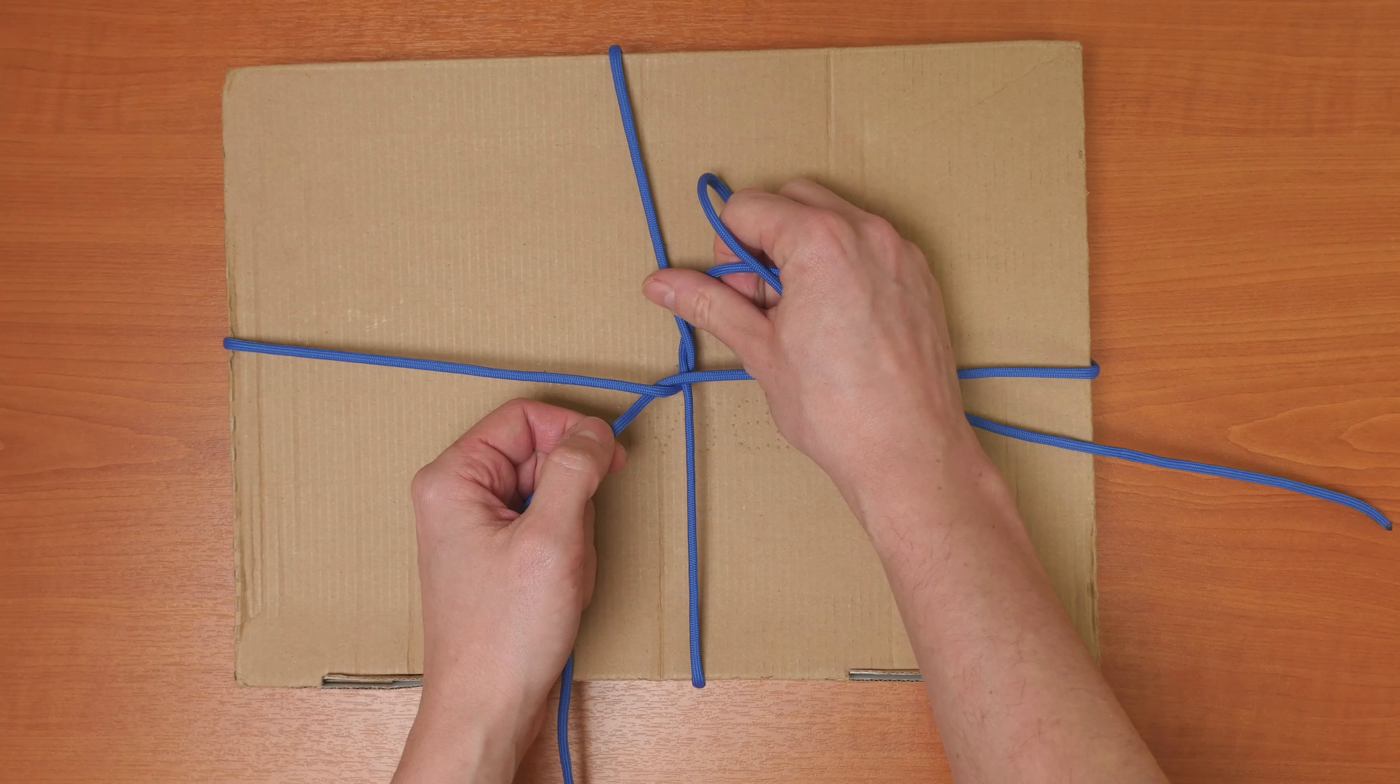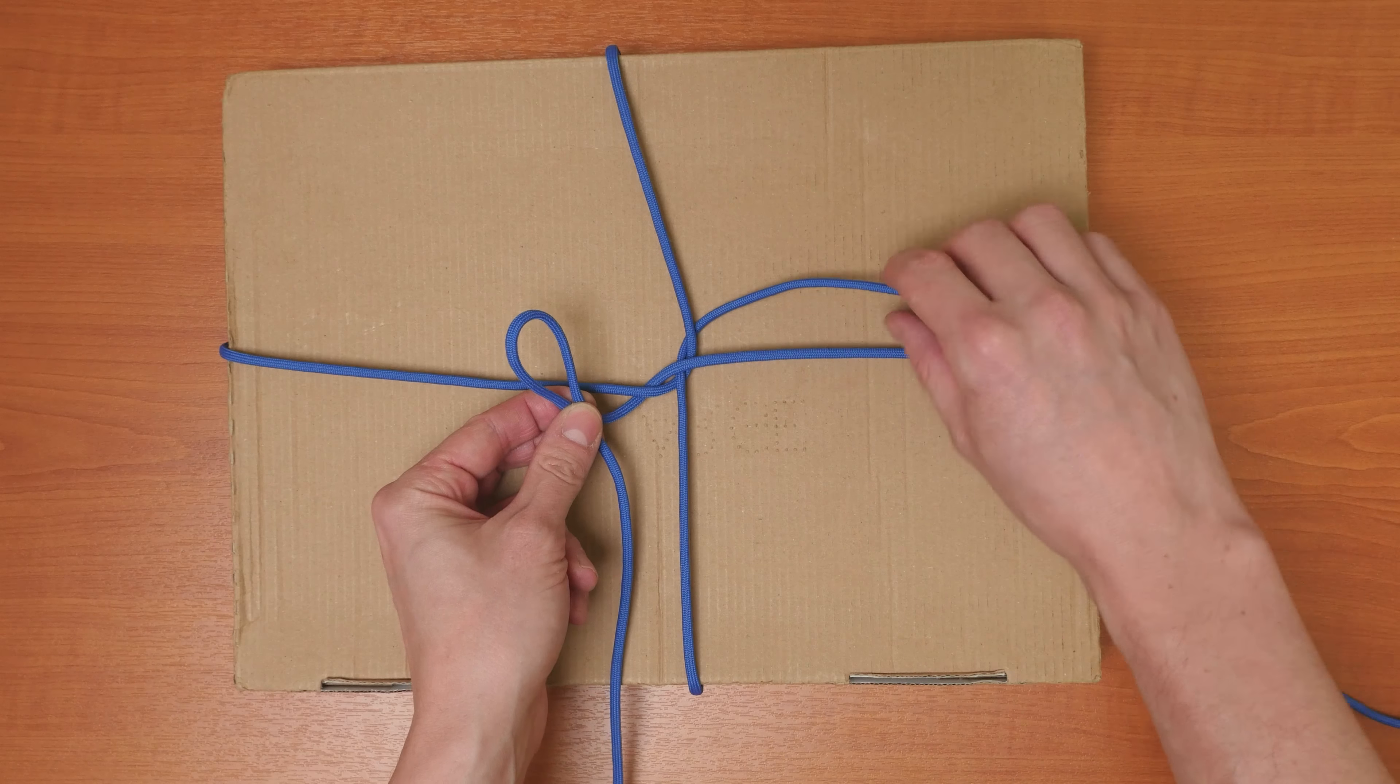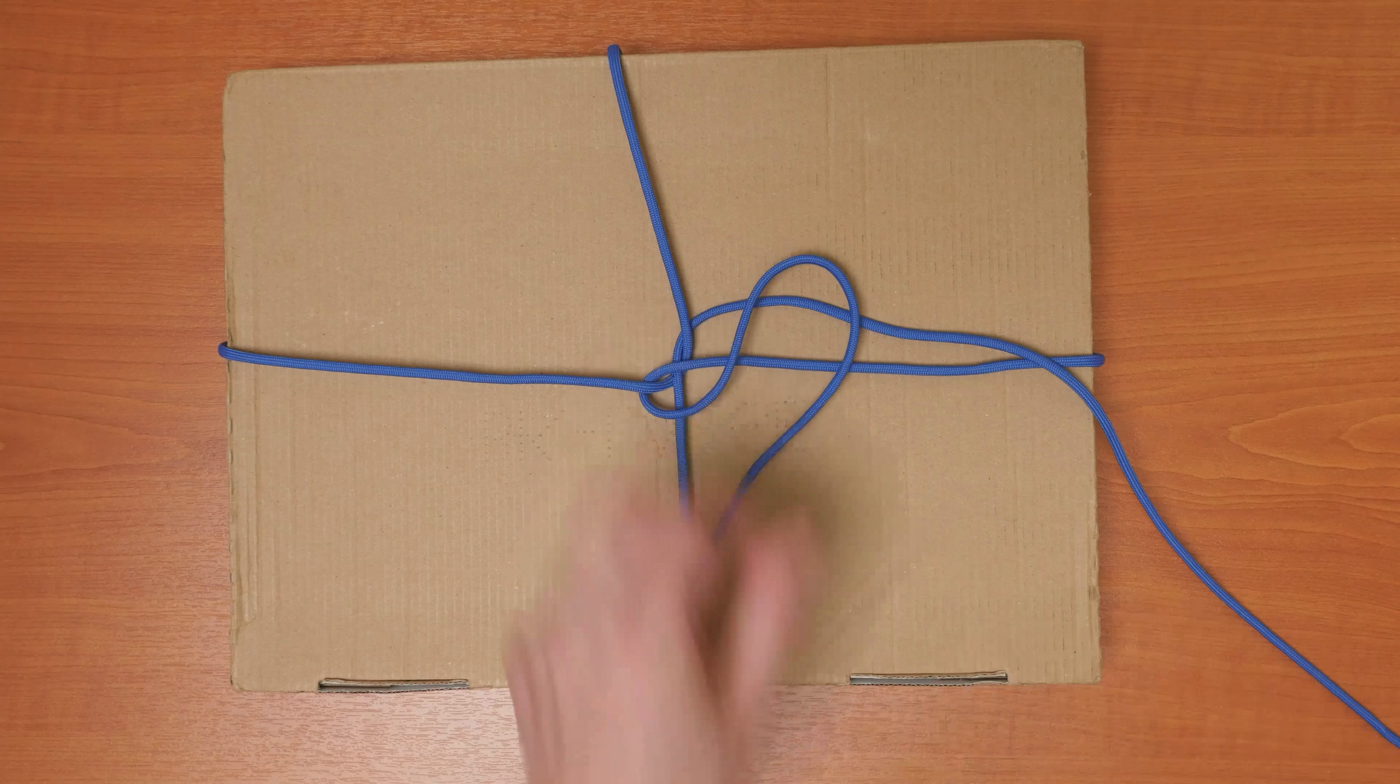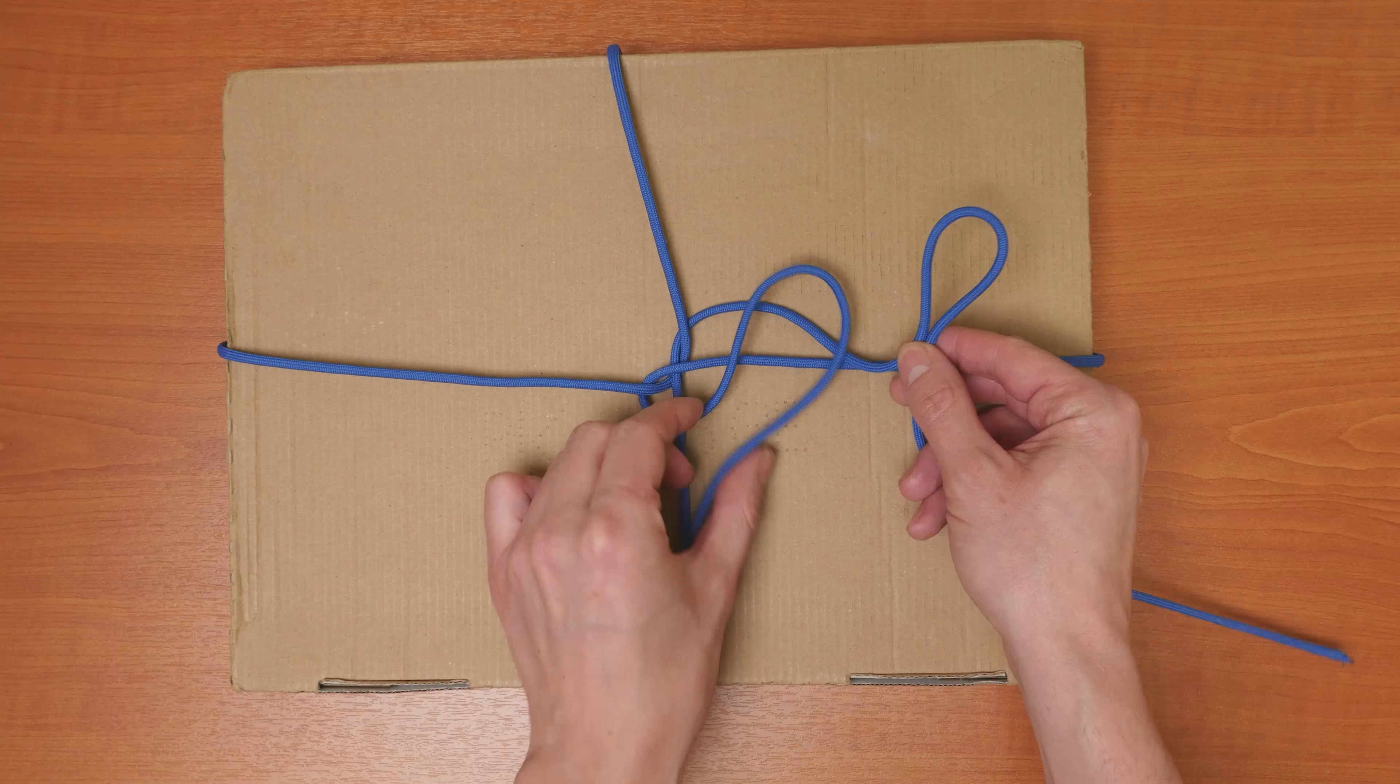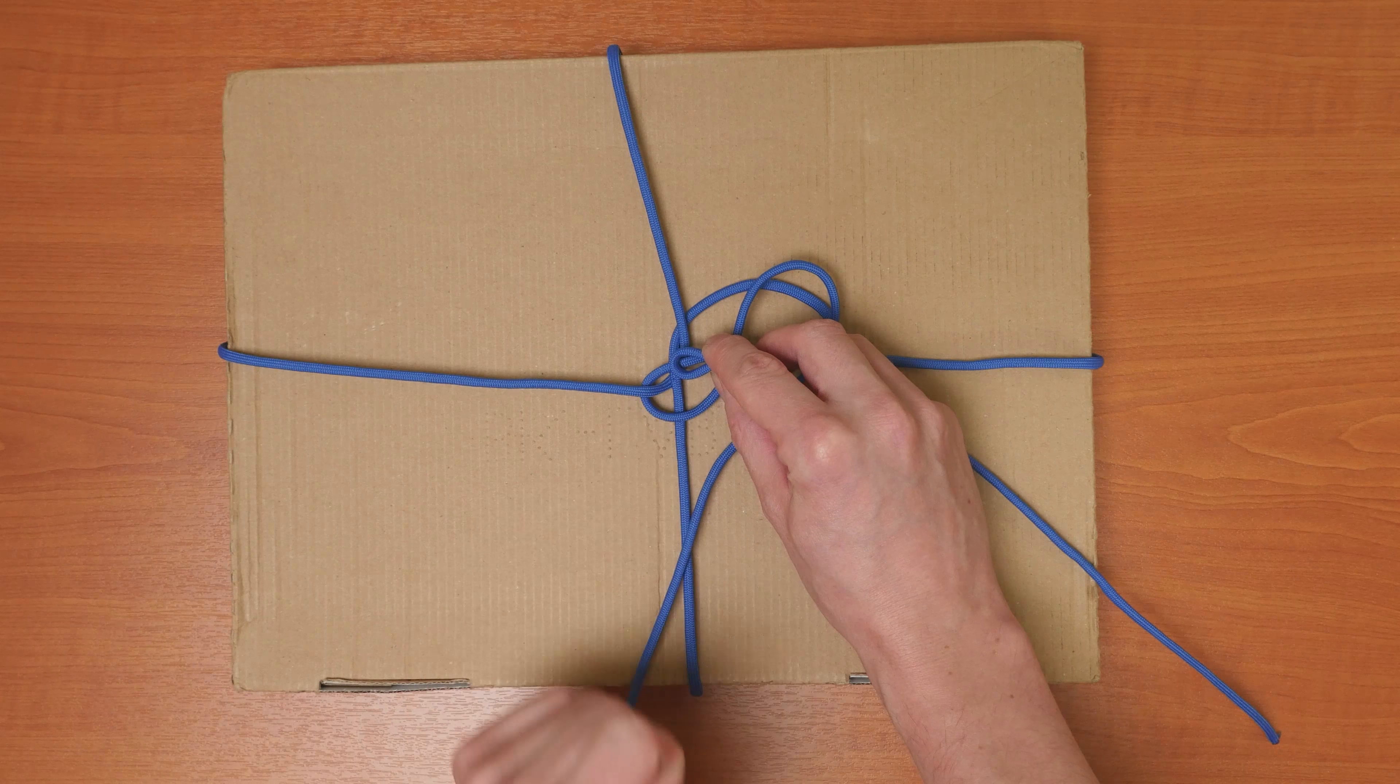Now we're going to finish it by making a simple shoelace bow. So I'm going to make a bite using my left strand and I'm going to place it over the right strand like this. Now using the right strand I'm going to make a bite, place it over the left bite and into the opening here on the left side.